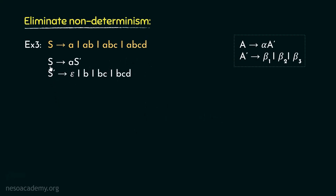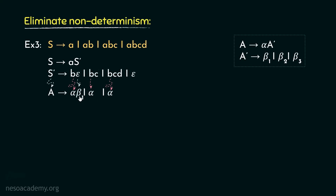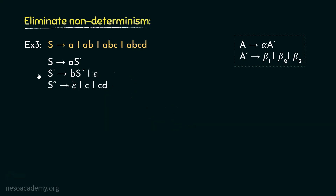There is no non-determinism in the productions of S. However, that's not the case for S'. Rearranging the productions of S': if we consider S' as the non-terminal A, then in these three productions the B's are the alphas. Clearly, Epsilon is beta1, C is beta2, and CD is beta3. Factoring out the common prefix: S' can be rewritten as B followed by S'', and S' can also be rewritten as Epsilon. The S'' can be rewritten as Epsilon, C, or CD.